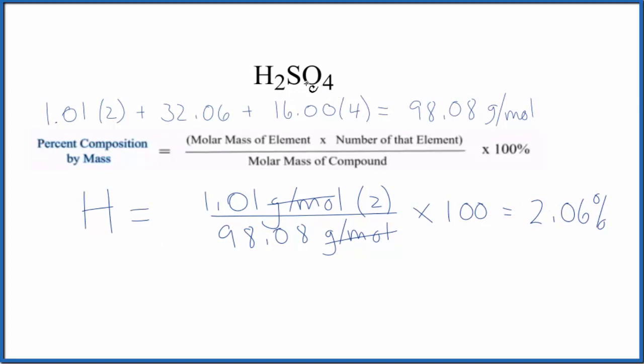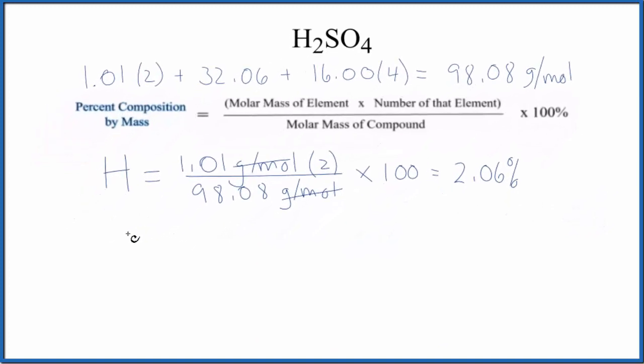Let's do the sulfur. Sulfur on the periodic table is 32.06 grams per mole, and since the units cancelled out, I'm not going to write the units again. We only have one sulfur, so we don't need to do anything to that. We divide by the molar mass of the compound, multiply by 100...